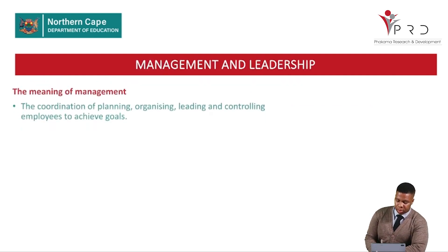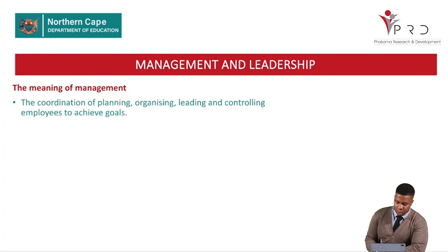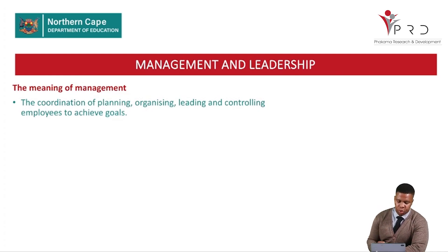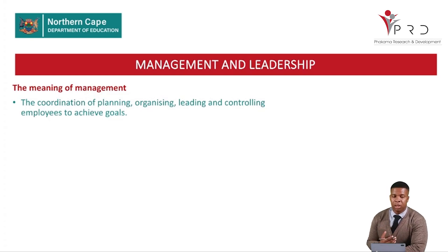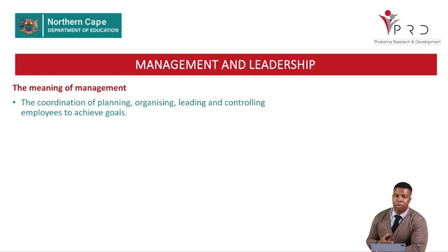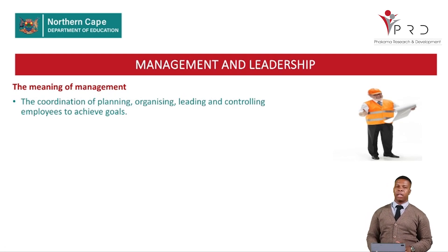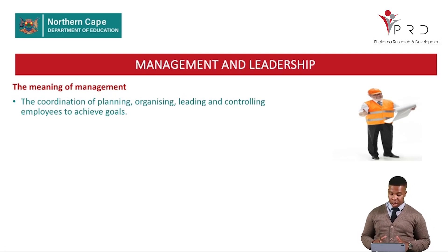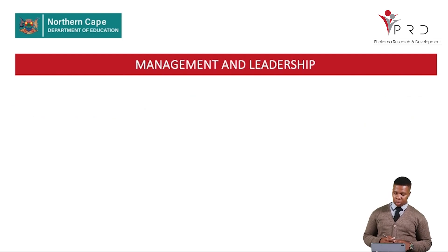The meaning of management is the coordination of planning, organizing, leading, and controlling employees to achieve the goals the organization has set. An organization has a vision and mission — for example, what they want to achieve after 10 years. Managers must plan, organize, lead, and control employees towards achieving that goal, using the tools available to make sure the organization achieves those results.